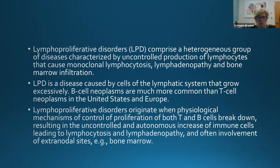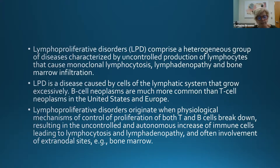It's a heterogeneous group of diseases, but the characteristics they all share are uncontrolled production of lymphocytes — a monoclonal lymphocytosis. Some of them have more lymphadenopathy associated with them than others, and some have more bone marrow infiltration. They are caused by cells of the lymphatic system that grow excessively.